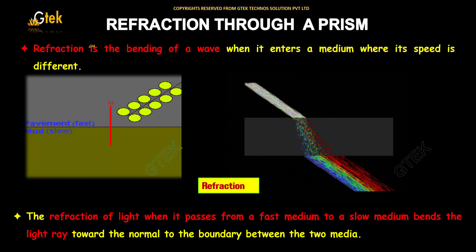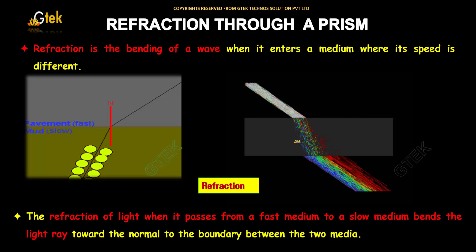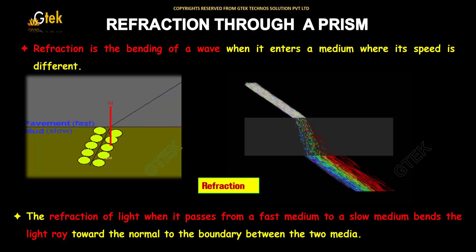Refraction is nothing but bending of a wave when it enters into a medium where its speed is different. The refraction of light when it passes from a fast medium to a slow medium bends the light ray towards the normal to the boundary between the two media.